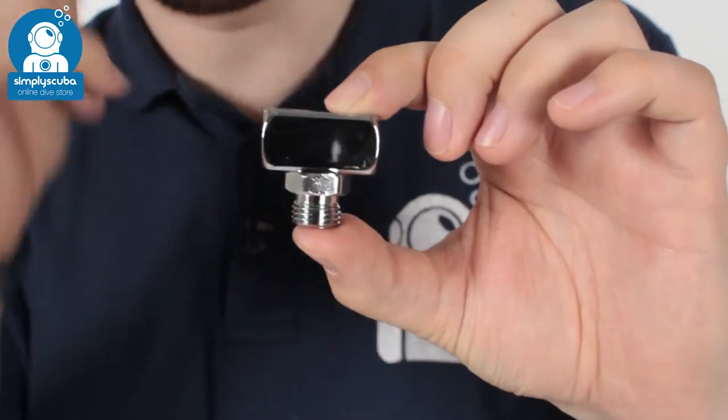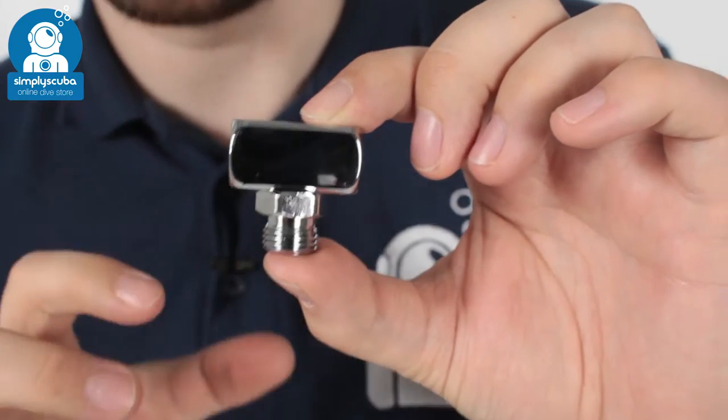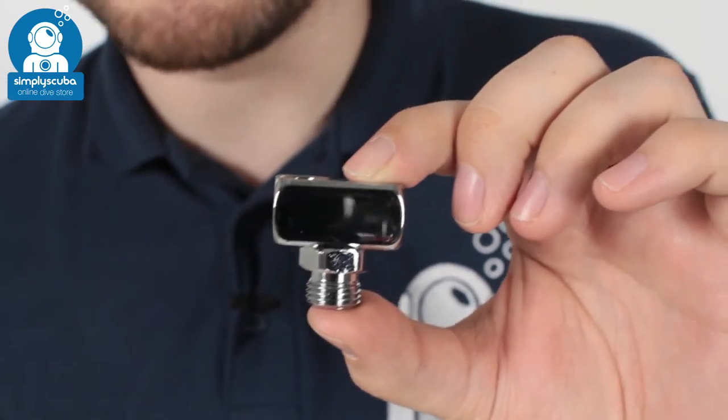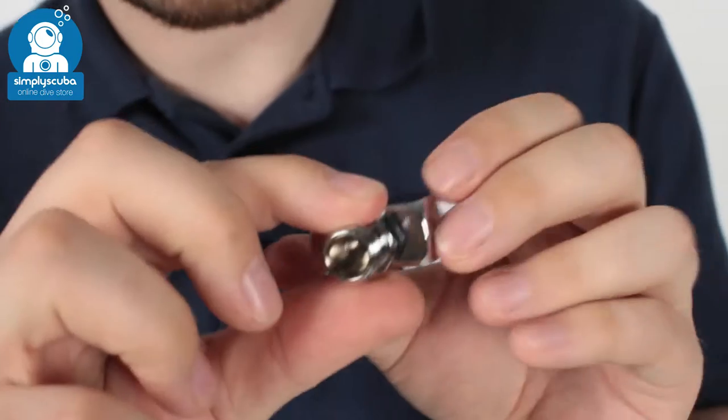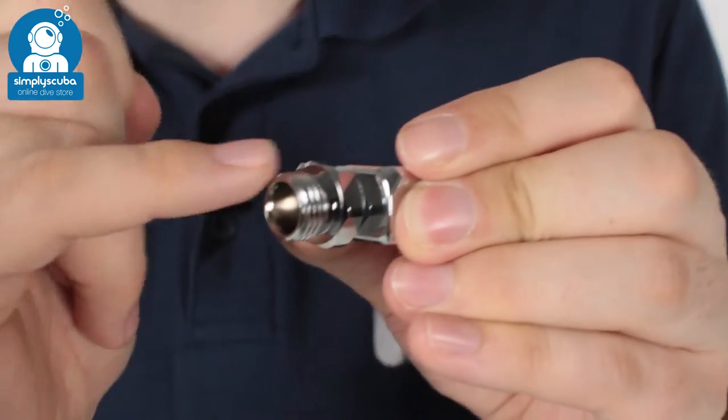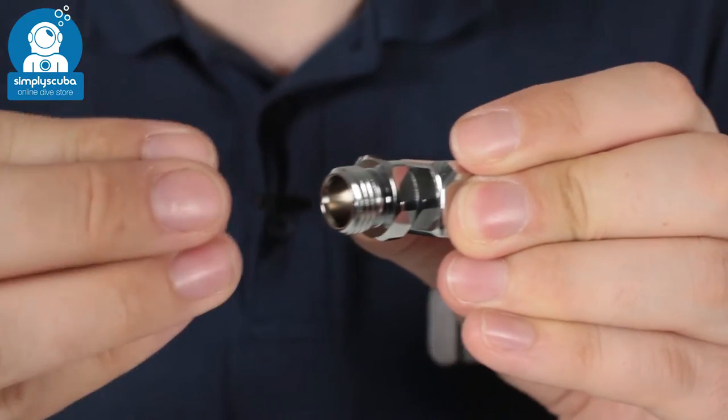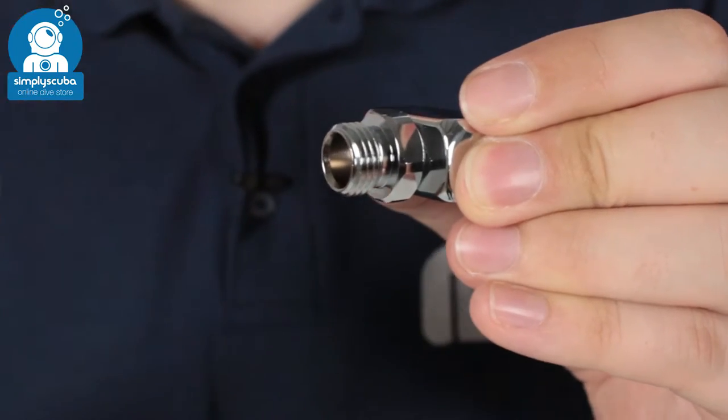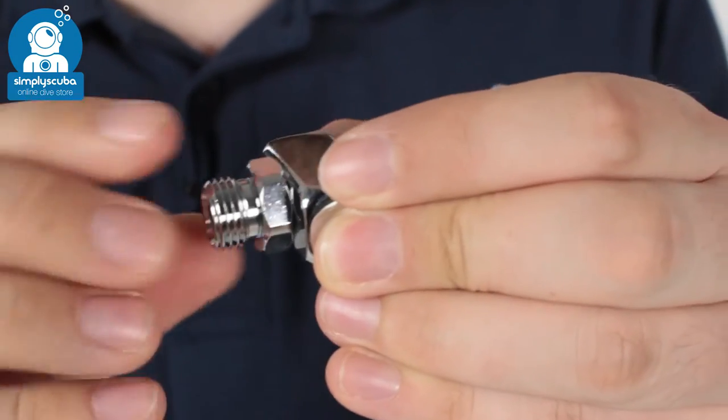This is a great way of having two low-pressure hoses come out of a single low-pressure hose. At the base of it, you have a standard size regulator hose. This goes onto any standard size regulator port. You just screw that on there.